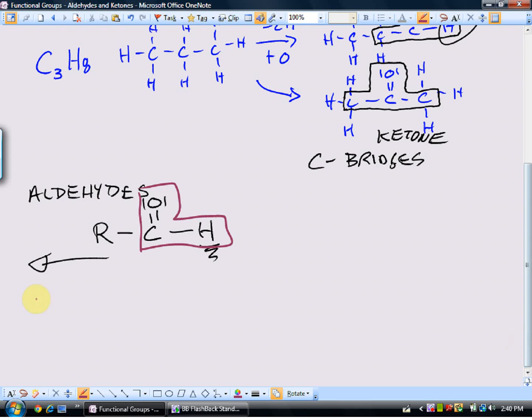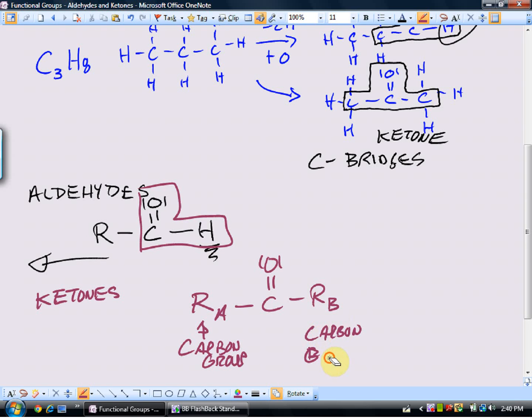Ketones have carbon groups on both sides. So again, we'll use this term, we'll use this R sub A, where that represents a carbon group, connected to that carbon-oxygen double bond, connected to another carbon group that can be different. And therefore, we use the R sub B. So notice the difference between aldehydes and ketones. Subtle difference. Ketones already have carbon groups on both sides. Aldehydes have carbon groups only on one side and hydrogen on the other side.